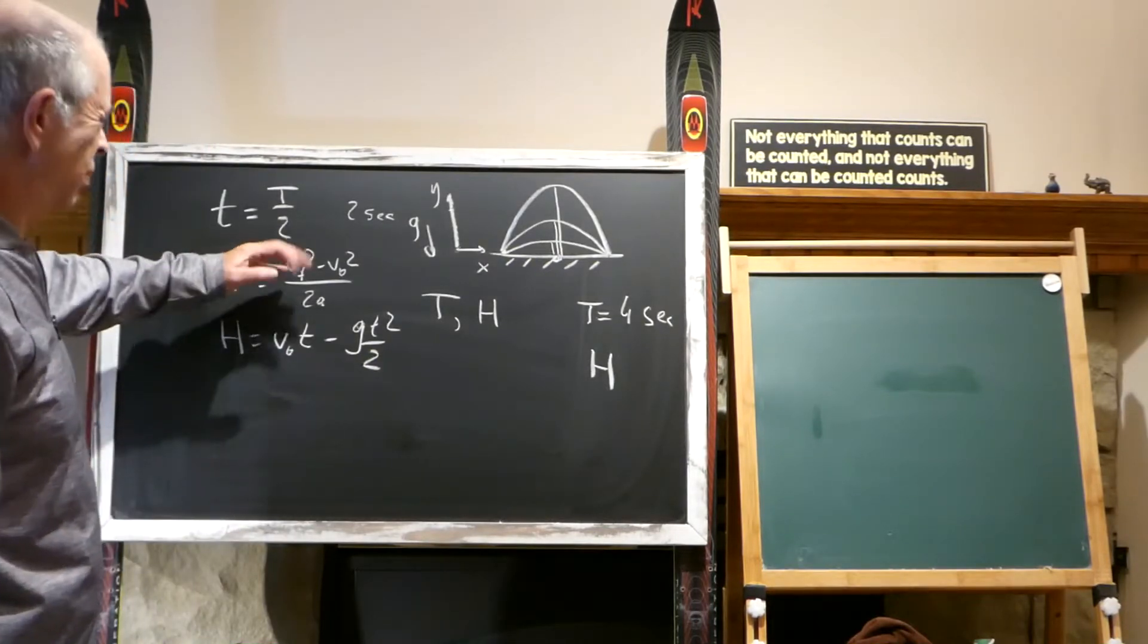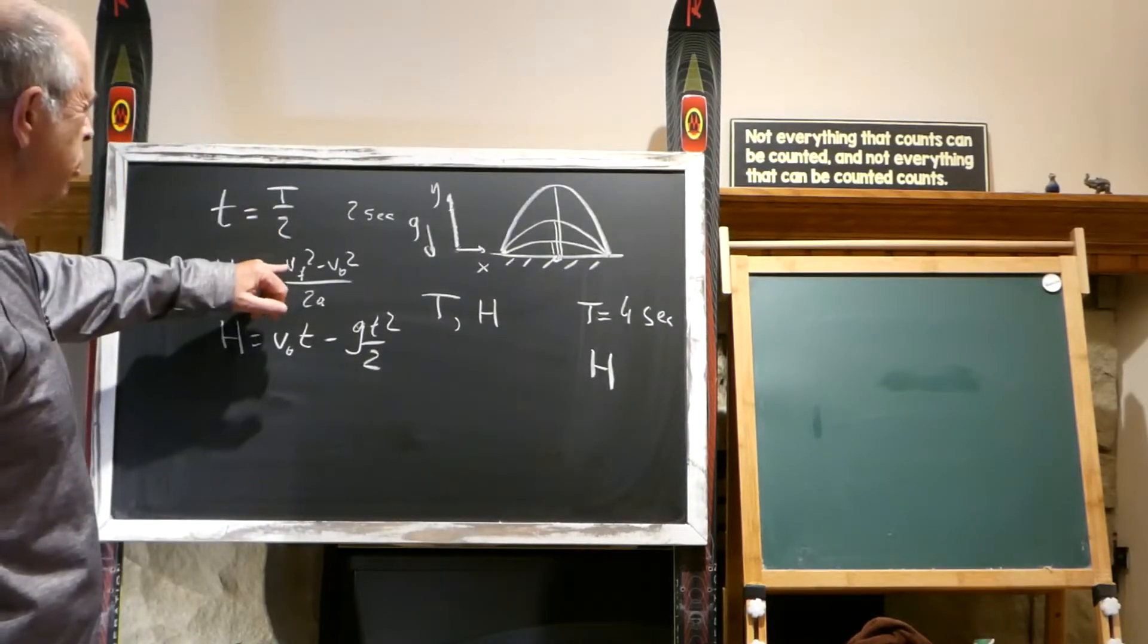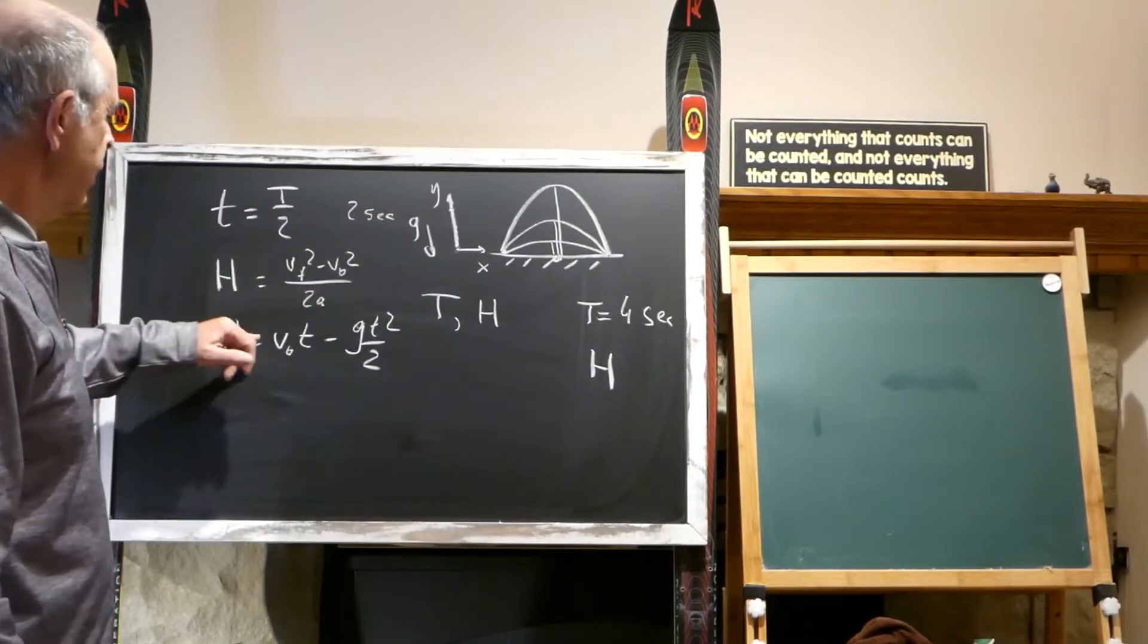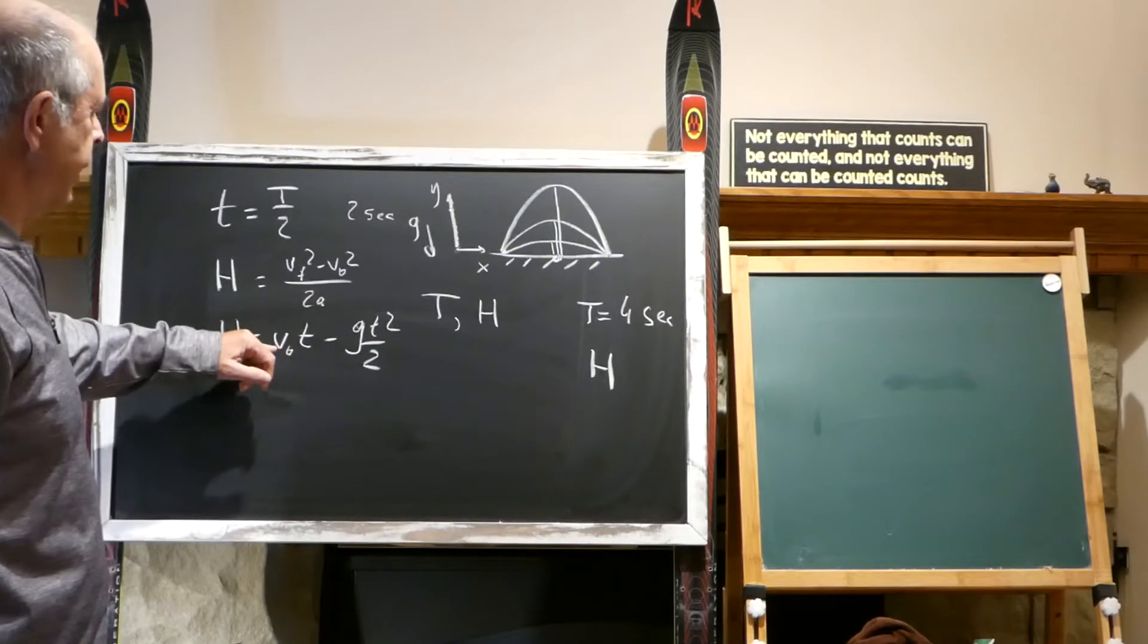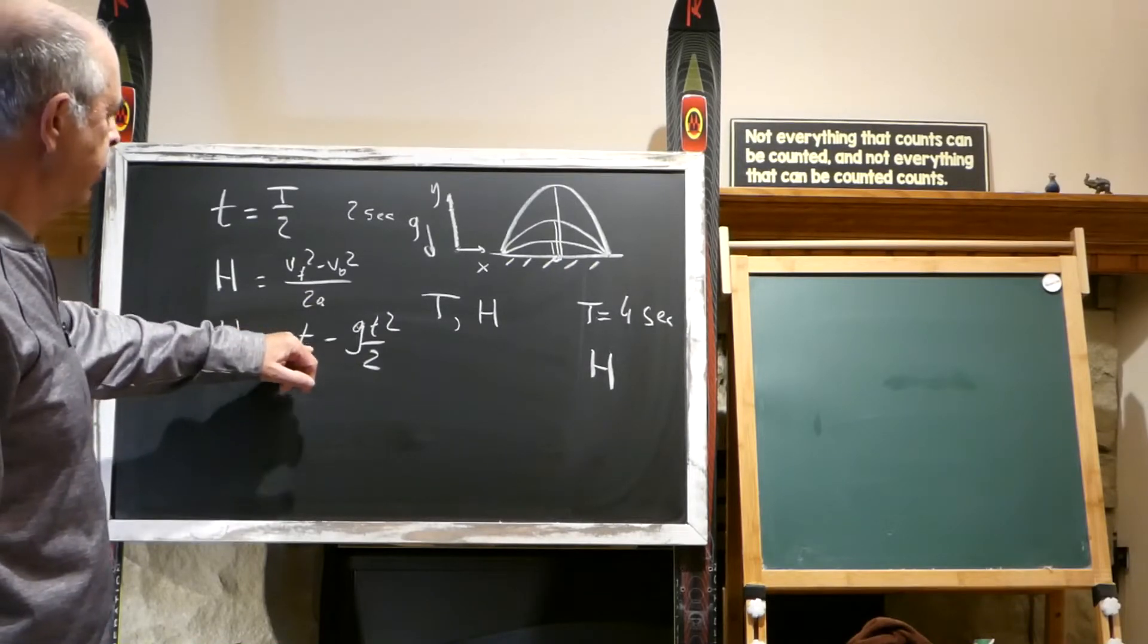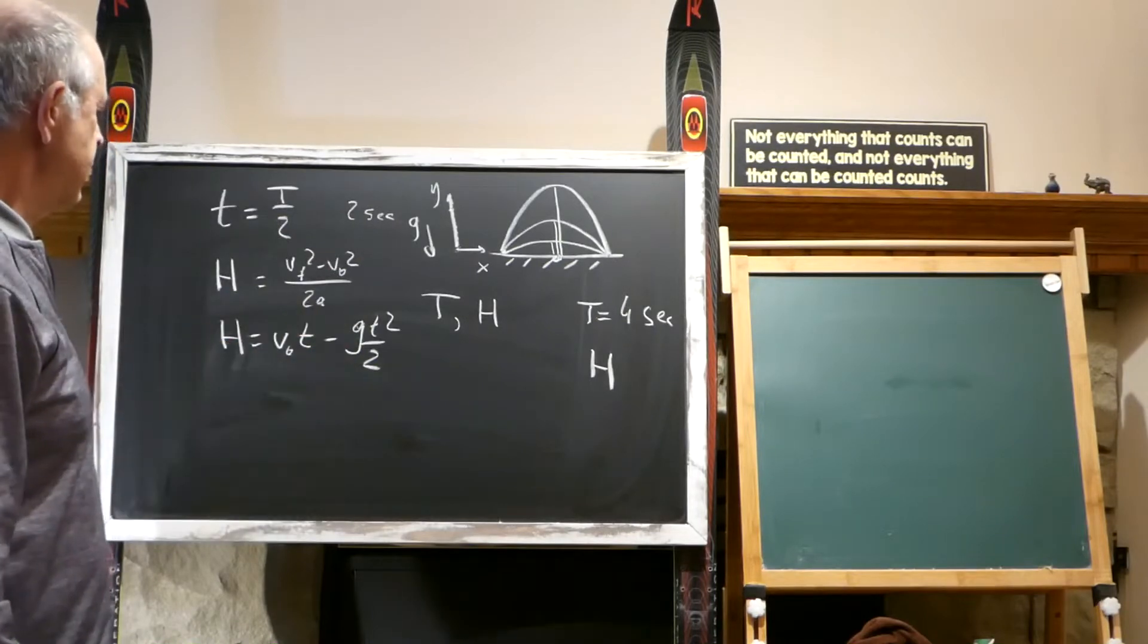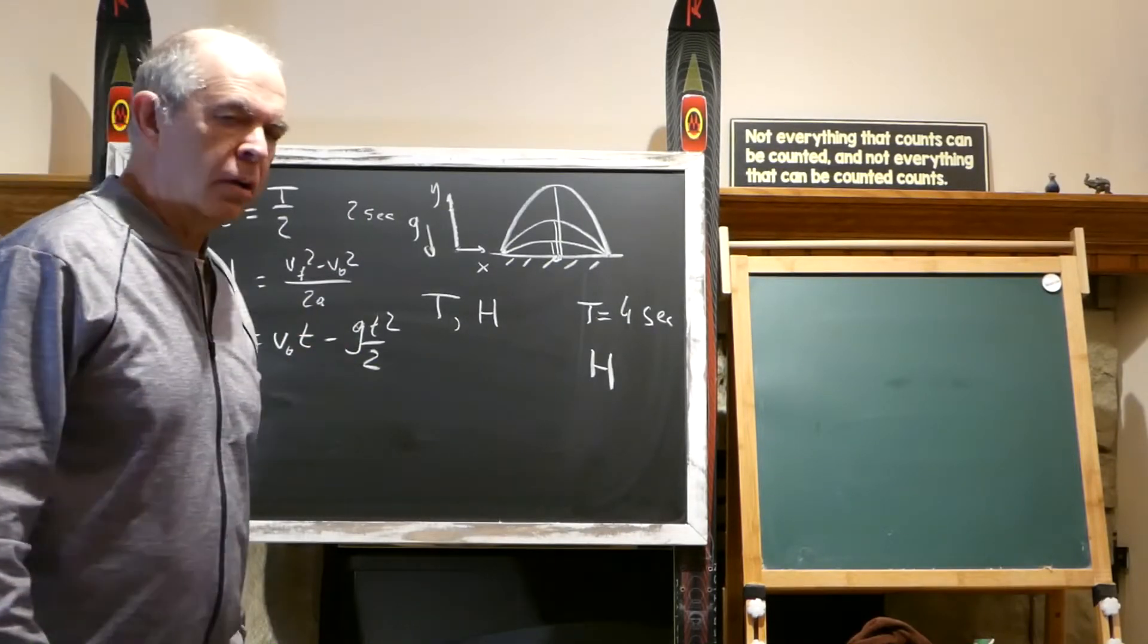This is not straightforward because there are too many things that we don't know - V final, V zero. This one is a little bit better. We don't know V zero, but we know T, and T is 2 seconds, T over 2.